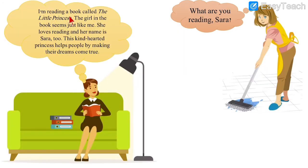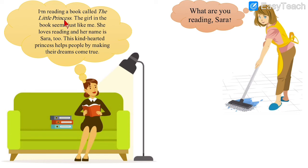Rina asks Sara: 'What are you reading, Sara?' Sara replies: 'I am reading a book called The Little Princess.' That is the name of the storybook Sara is holding. Sara then tells Rina: 'The girl in the book seems just like me' — meaning the girl in the story looks just like Sara.